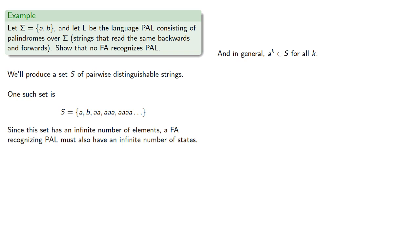Since our pairwise distinguishable set has an infinite number of elements, a finite automaton recognizing the language of palindromes would have to have an infinite number of states, so it wouldn't be finite.